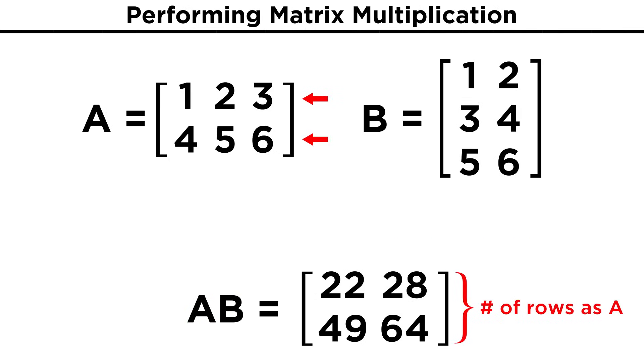So the product matrix will always have a number of rows that is equal to the number of rows in the first matrix, and a number of columns that is equal to the number of columns in the second matrix.